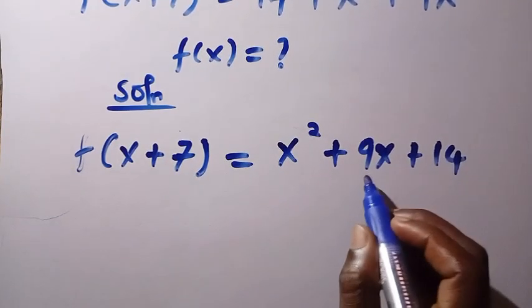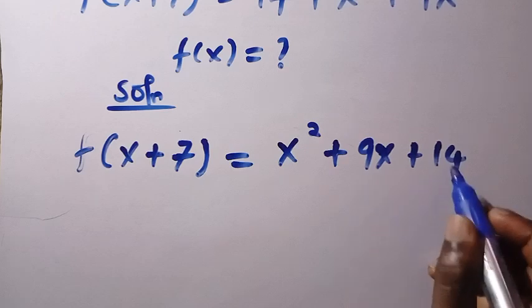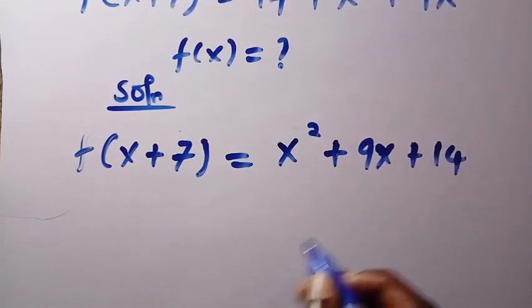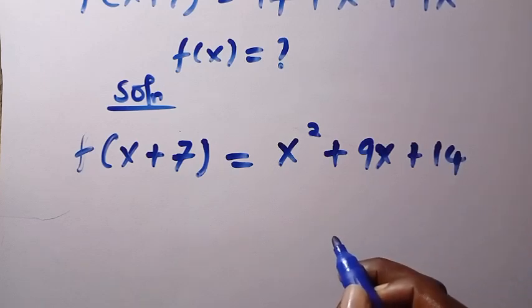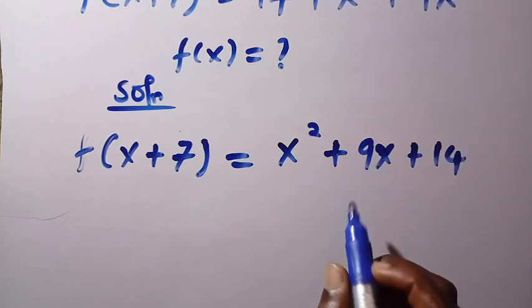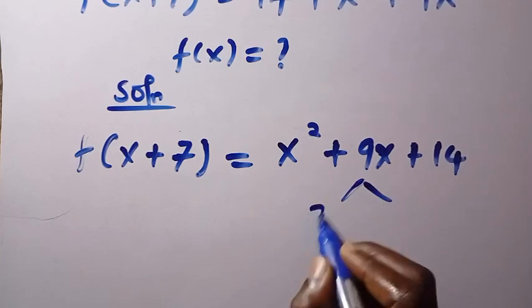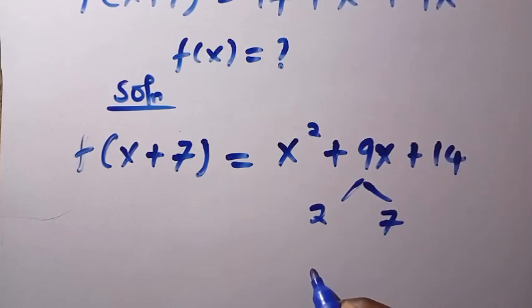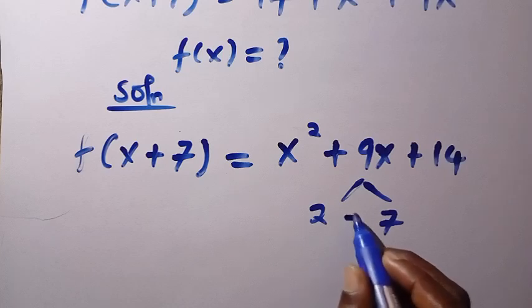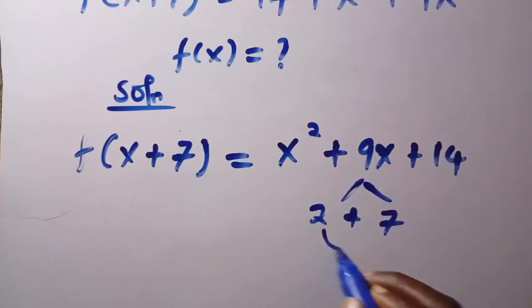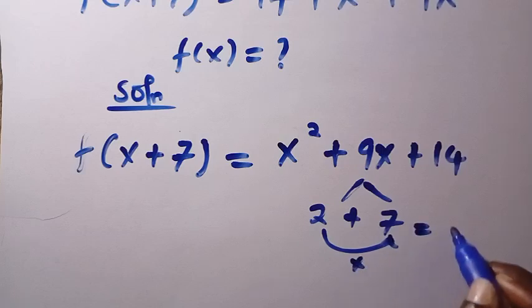Here we have this side as the sum and here is the product. Looking for two numbers that when we multiply it, it gives us 14 and when we add it, it gives us 9. So we are going to have 2 versus 7. Because if we say 2 plus 7, this gives us 9. And when we multiply 2 and 7 together, this gives us 14. Therefore, 2 and 7 works for this.